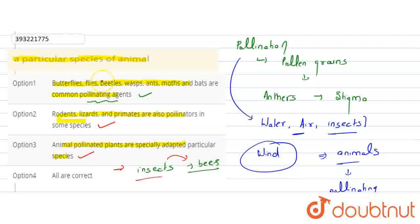And the majority of insect-pollinated flowers are colorful, large, and rich in nectar. What is the fourth statement? All are correct.